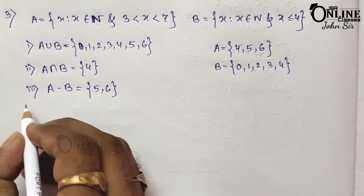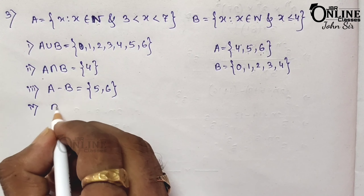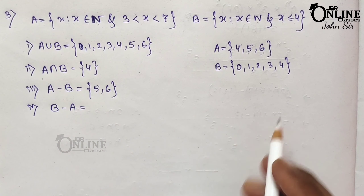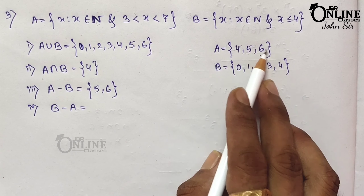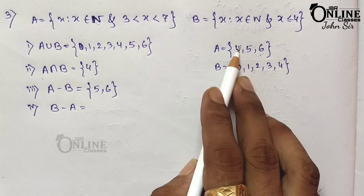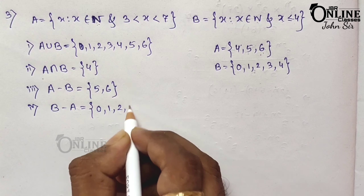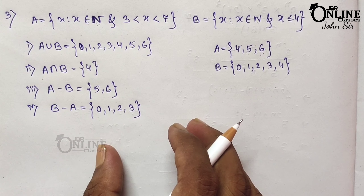The last one, B minus A: subtract the common element 4 from B, so the remaining elements are 0, 1, 2, and 3 as your answer.